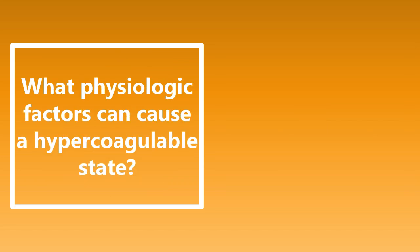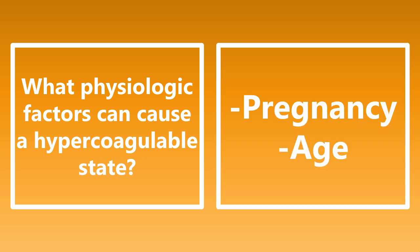What physiologic factors can cause a hypercoagulable state? There are many things that can cause hypercoagulability — acquired, genetic, etc. — but there are only two physiologic factors: pregnancy and age. This is why pregnant patients who come in with shortness of breath need to have pulmonary embolism considered, because they are hypercoagulable. Be sure to think about those kinds of conditions in pregnant patients as well as older patients.